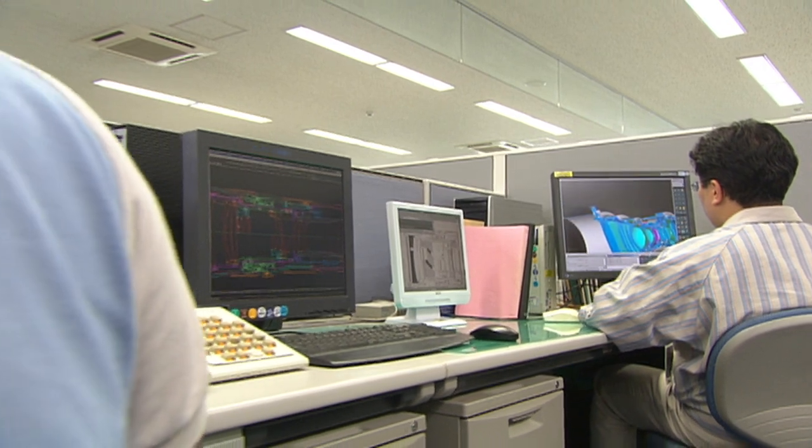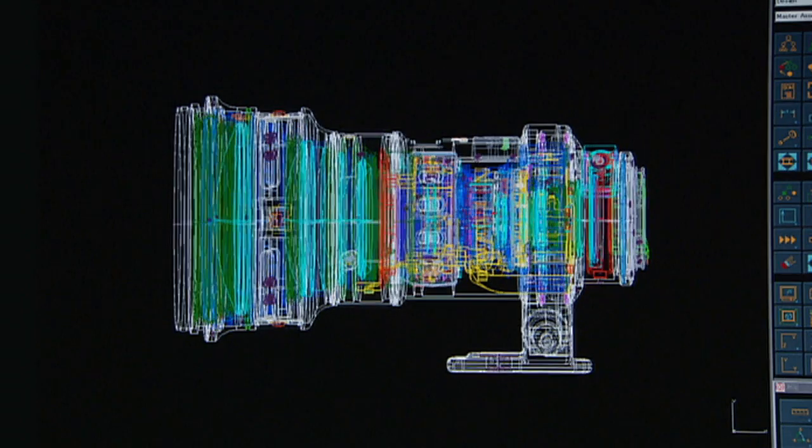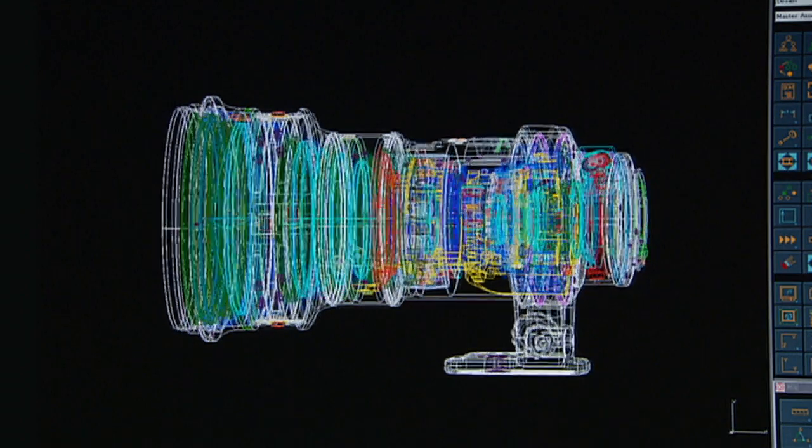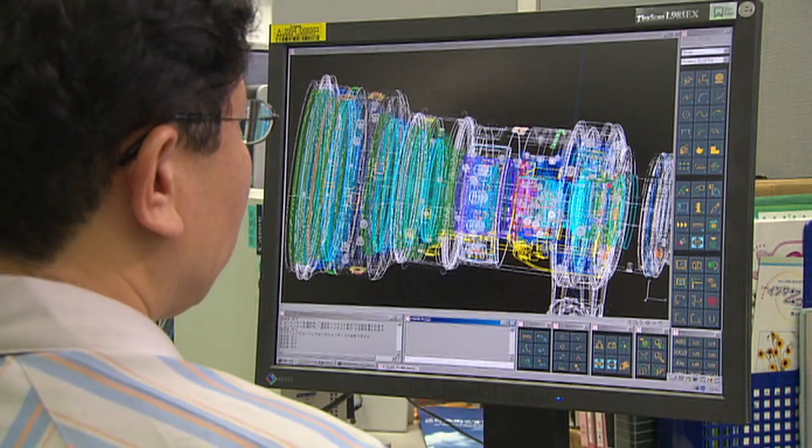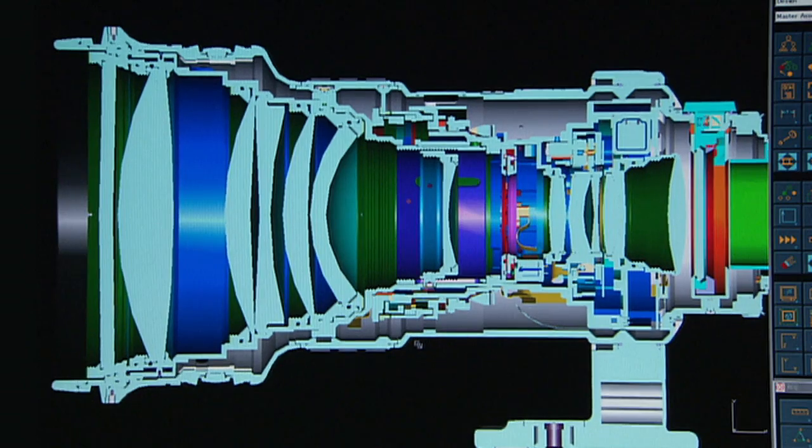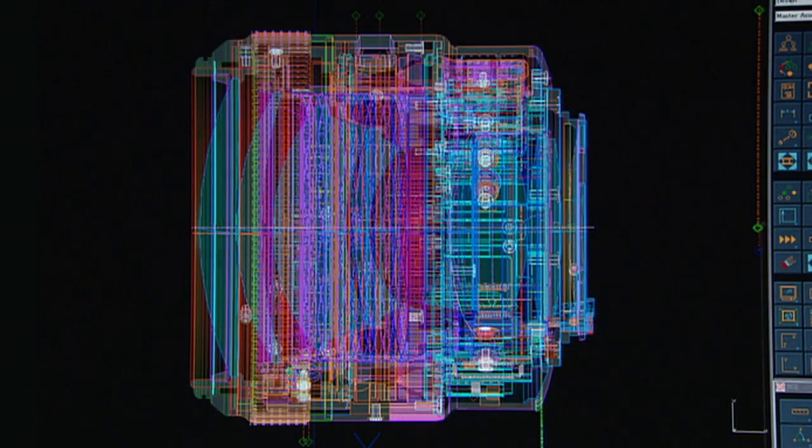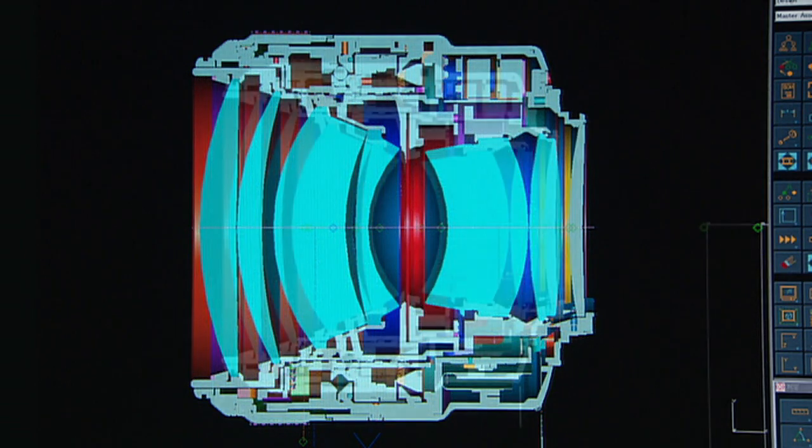Canon's pursuit of the ideal lens has enabled us to overcome various aberrations that were thought to be insurmountable. When designing lenses, Canon uses original computer software that incorporates our years of accumulated know-how to discover the optimum lens configurations and positions to minimize all aberrations.